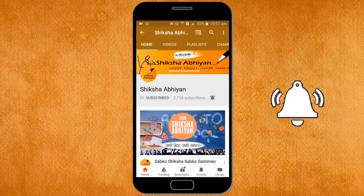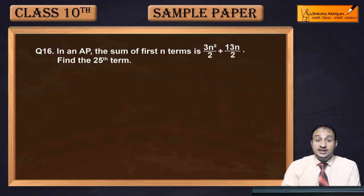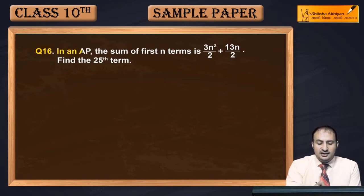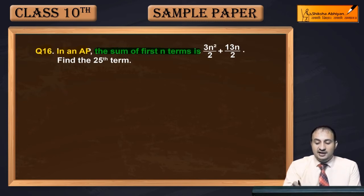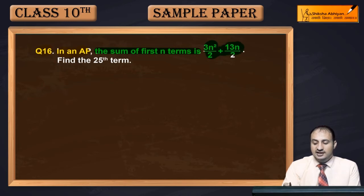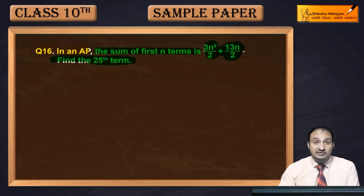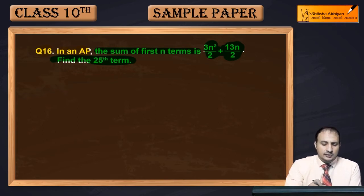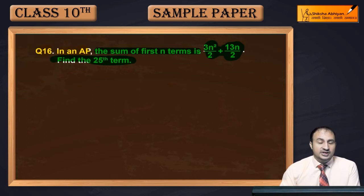Question 16: In an AP (arithmetic progression), the sum of the first n terms is 3n²/2 + 13n/2. Find the 25th term. We need to find the 25th term. Let's see how we can do this.